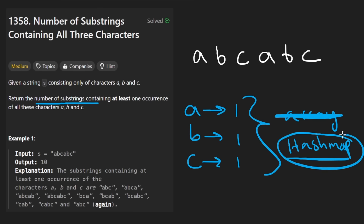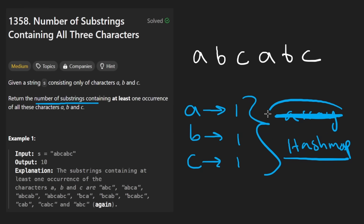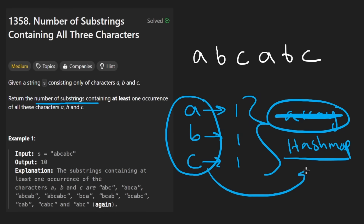Hash maps kind of abstract the array indexing away from us via the hash function. I like to keep things simple, but feel free to use an array if you want to make your solution marginally faster. Since we only have three characters going into the hash map, it probably doesn't make a difference.